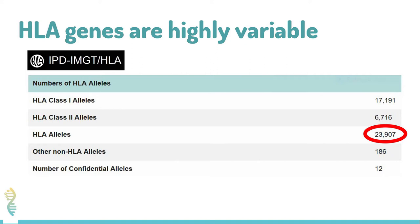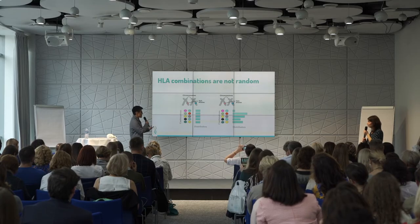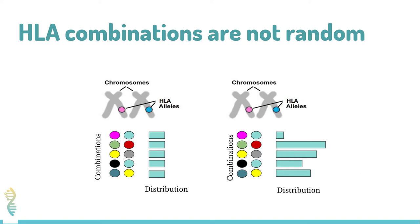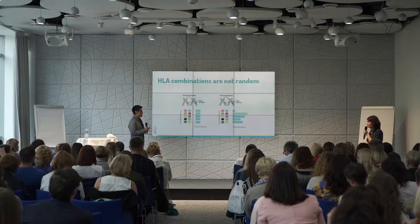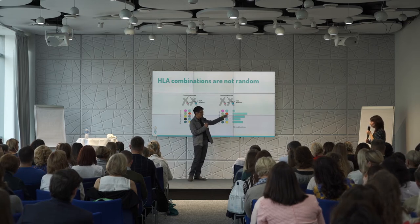Just to give you an idea, there are 23,900 reported HLA alleles — different alleles in the human population. The combination of alleles is important because if it weren't, we would see a random distribution between the mother's and the father's alleles. But this is not what we see — some pairs of alleles are overrepresented and some others are underrepresented.